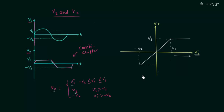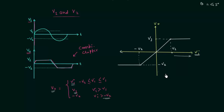When input voltage is less than minus V2, the output voltage is equal to minus V2. So this is the final plot for this problem.